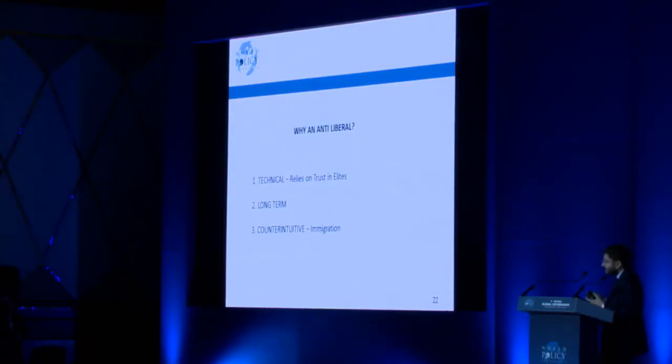Why is this anti-liberal? Because liberalism is quite technical — it relies precisely on that trust between elites and the people. It's very long-term, very counterintuitive. So the EU and other projects that require deep technical analysis and for people to trust those negotiating these agreements will be one of the big victims of this, but also free trade and others.